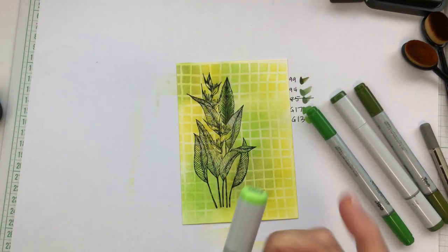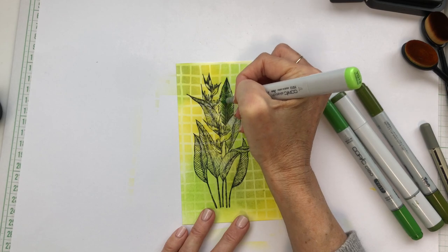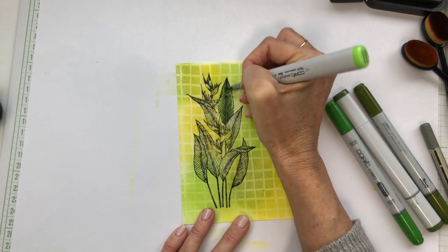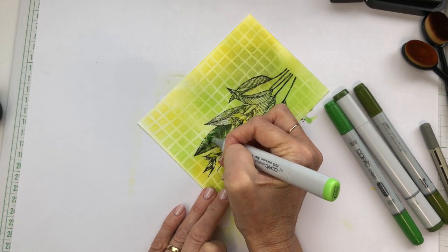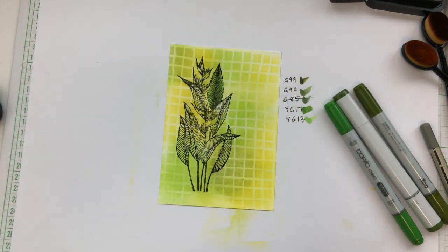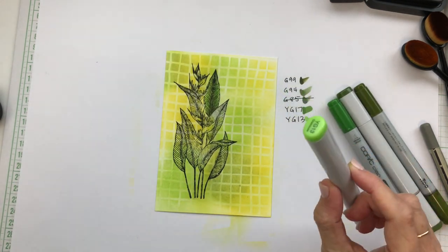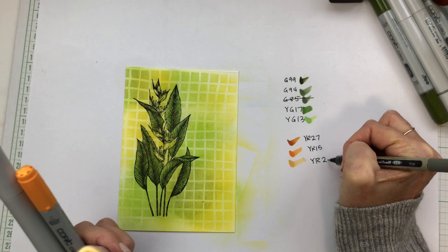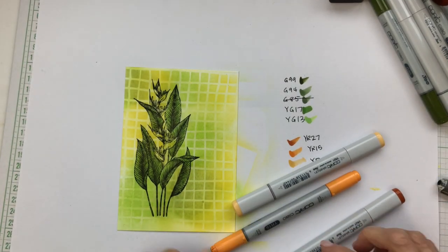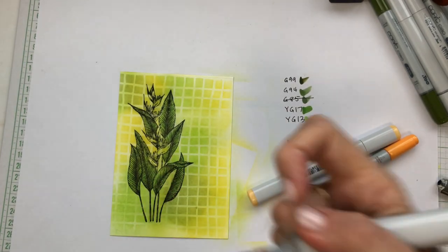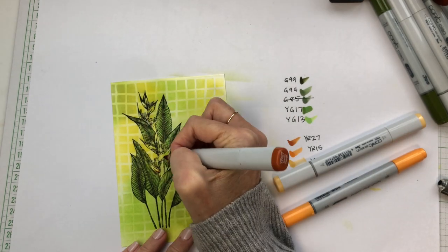I'm coloring this very simply, just putting the darkest colors up the center and towards the bottom of each leaf and then fading away to the lightest colors on the outside. I've used three different oranges to color the flowers, once again starting with the darkest colors at the base of the flower and fading out to the lighter colors.